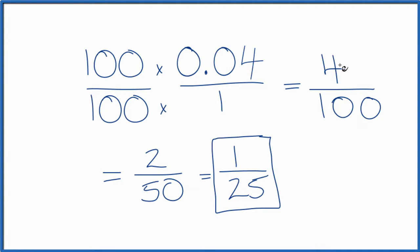And if you knew that 4 went into 100 25 times, you could have just gone straight from here to this 1 25th. Either way, when we change the decimal 0.04 to a fraction, we get 1 25th.